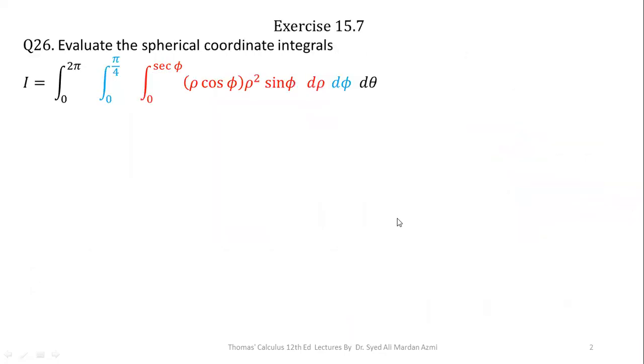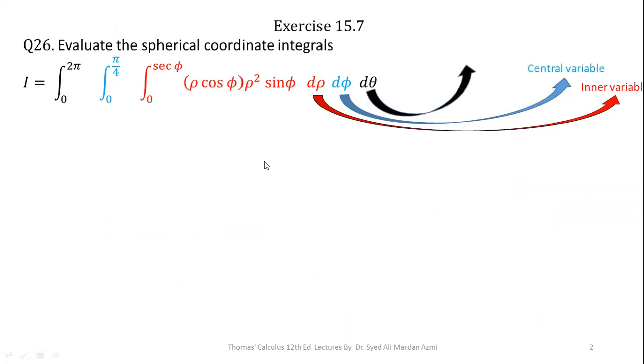Next, we will learn to evaluate this question number 26 from Thomas Calculus 12th edition books exercise 15.7. In triple integral spherical coordinates, rho is our inner variable, phi is our central variable and theta is our outer variable and this arrangement is always fixed. Here the limits of rho are 0 to sec of phi, limits of phi are 0 to pi by 4 and the limits of theta are 0 to 2 pi.